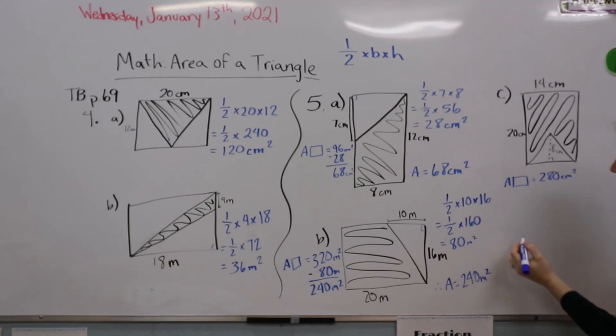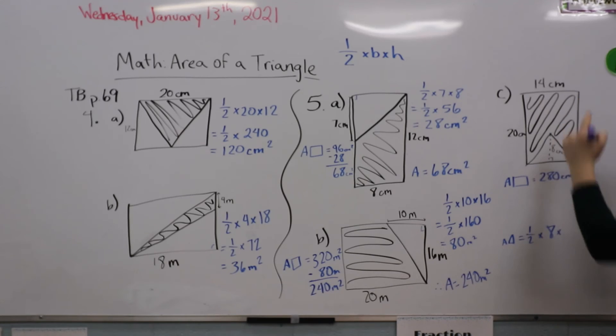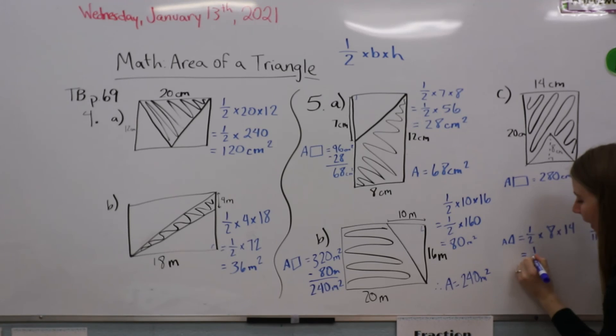I'm going to do the area of the triangle a bit lower down here. Area of the triangle is half times 8 times 14. I'm going to stack this for myself.